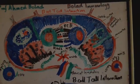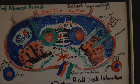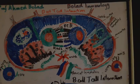In today's lecture, I will be talking about B-cell and T-cell interaction. As you know, B and T-cells originate from hematopoietic stem cells in the bone marrow, where B-lymphocytes mature, while T-lymphocytes migrate to the thymus for development of the repertoire, maturation, and education.